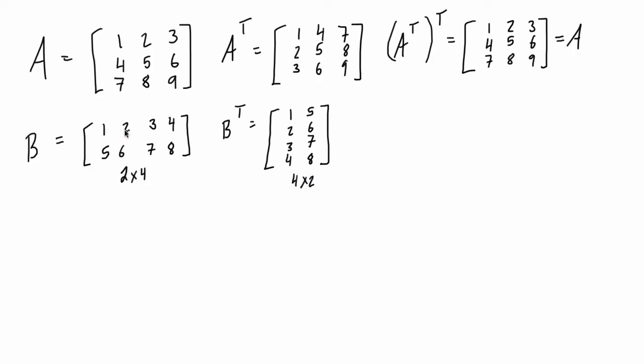And if we had looked, if we had swapped the columns for the rows, again, you'd see the same thing. So column 1 here is 1, 5. Row 1 is 1, 5. Column 2 is 2, 6. Row 2 is 2, 6. 3, 7, 3, 7. And 4, 8, 4, 8. So whichever way you prefer to do it totally works.